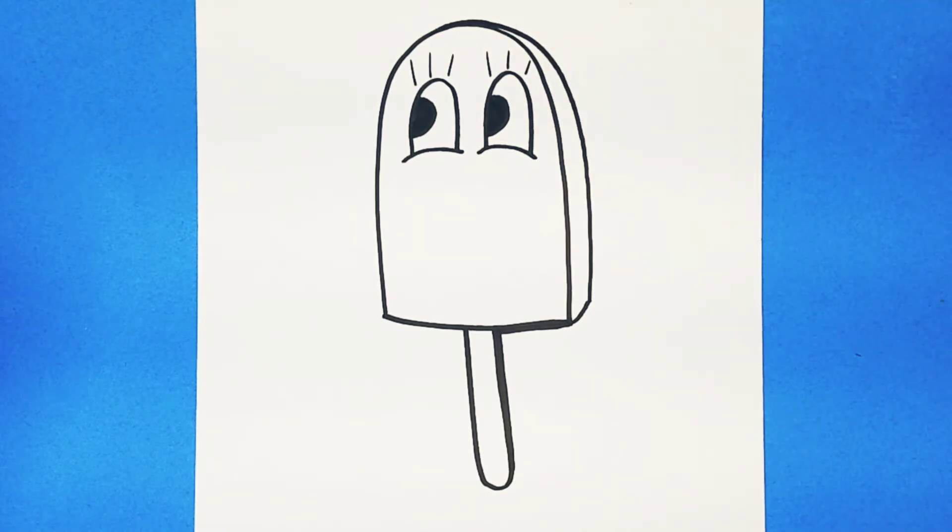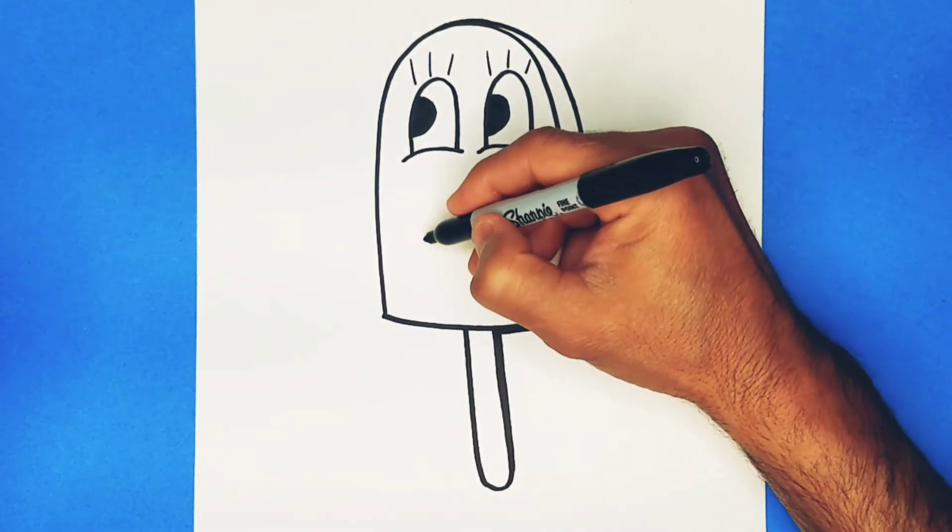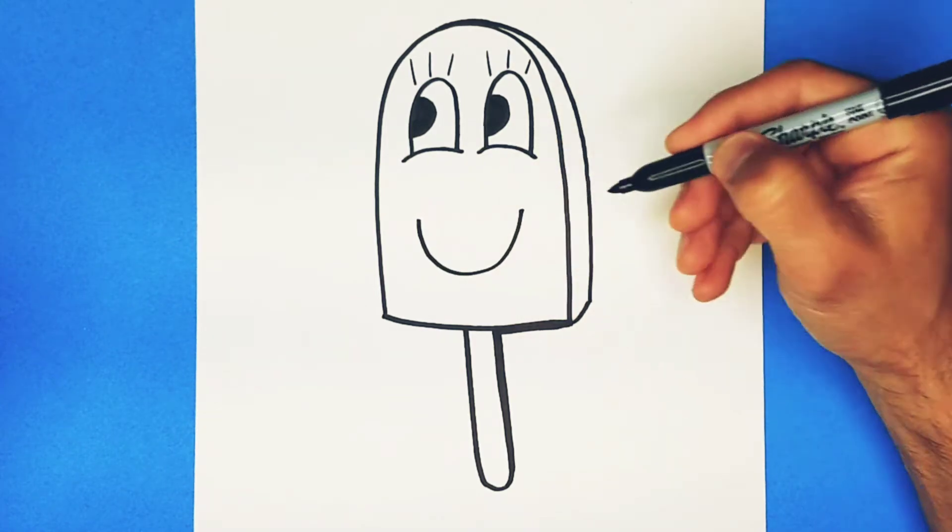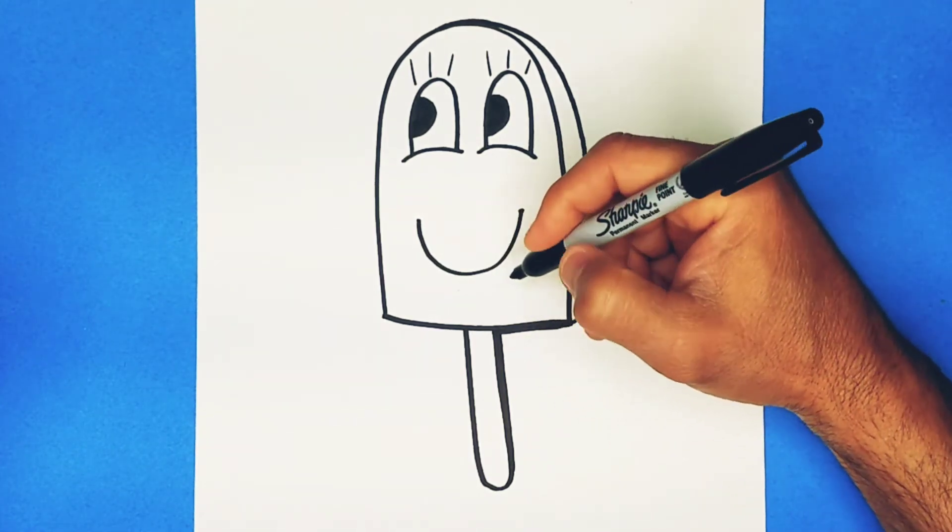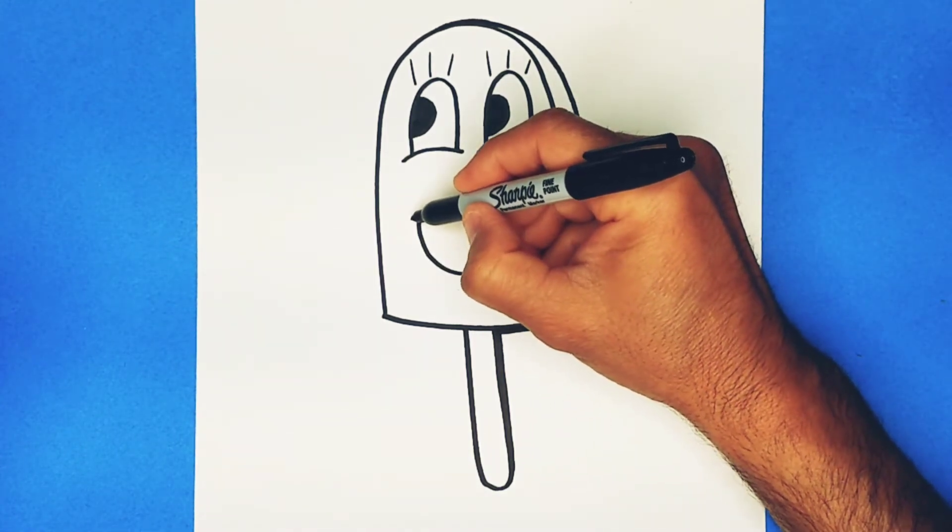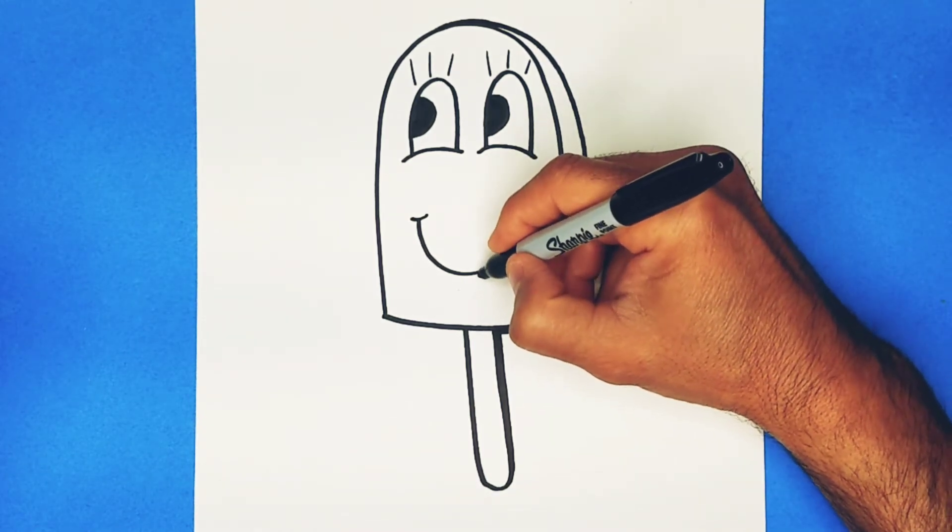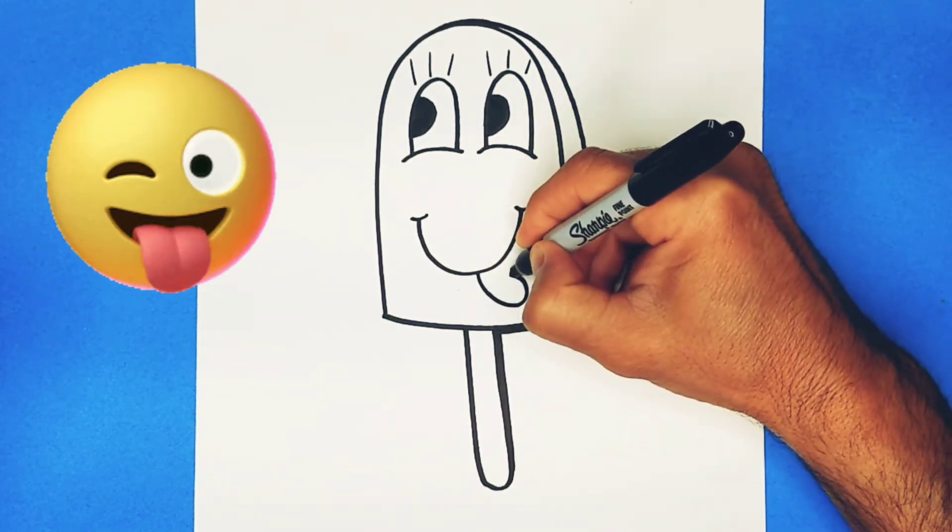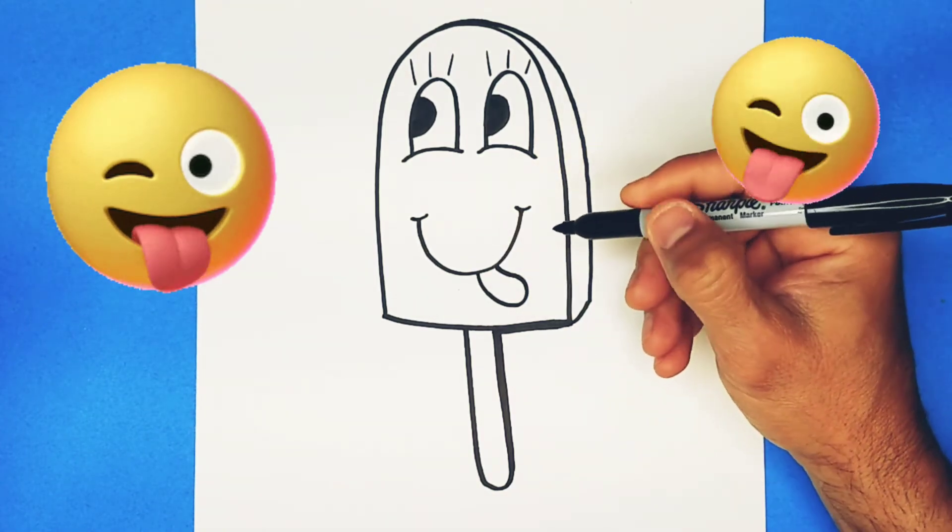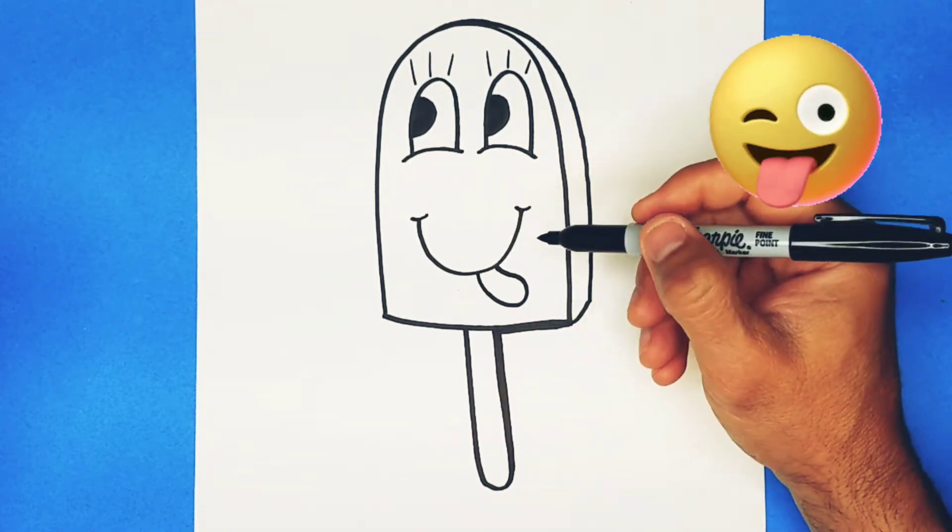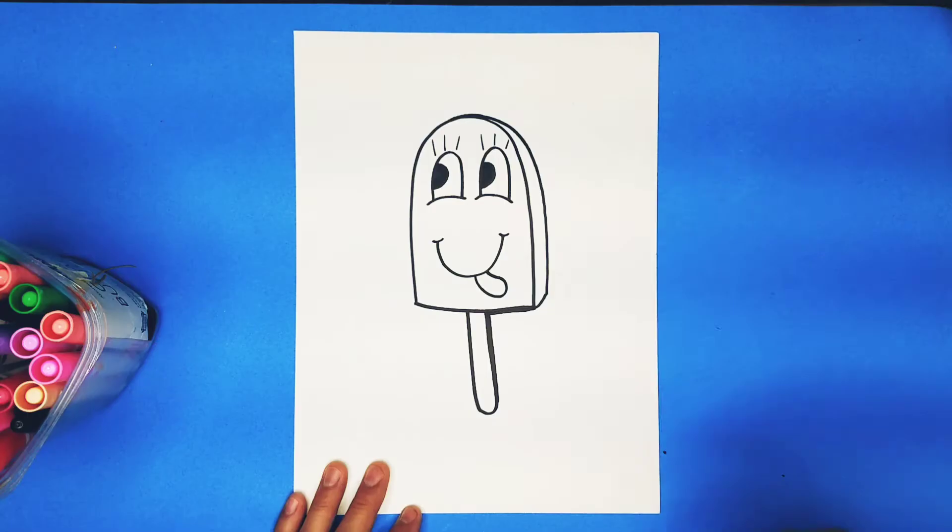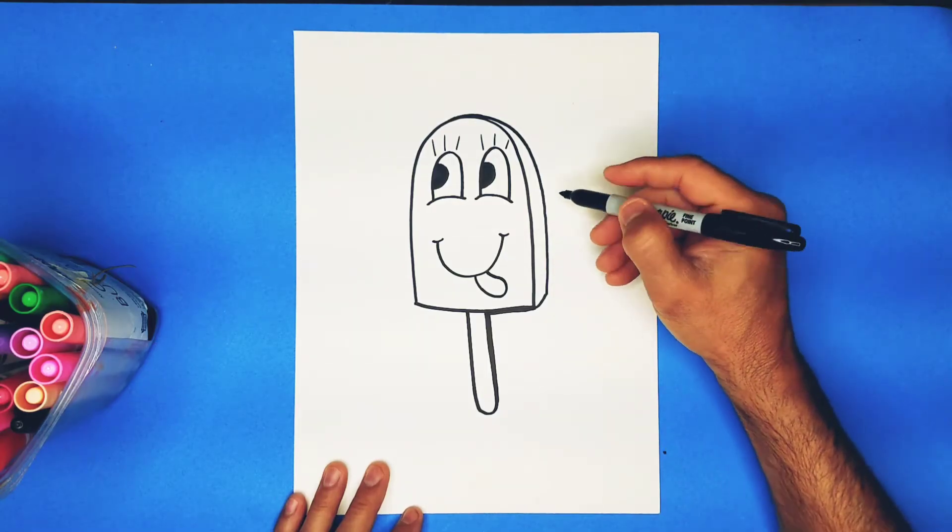Going to give her a nice smile and a little curve on the end. How about a silly tongue sticking out? Why does Ice Cream Pop Girl have a tongue sticking out? I don't know, we'll find out.